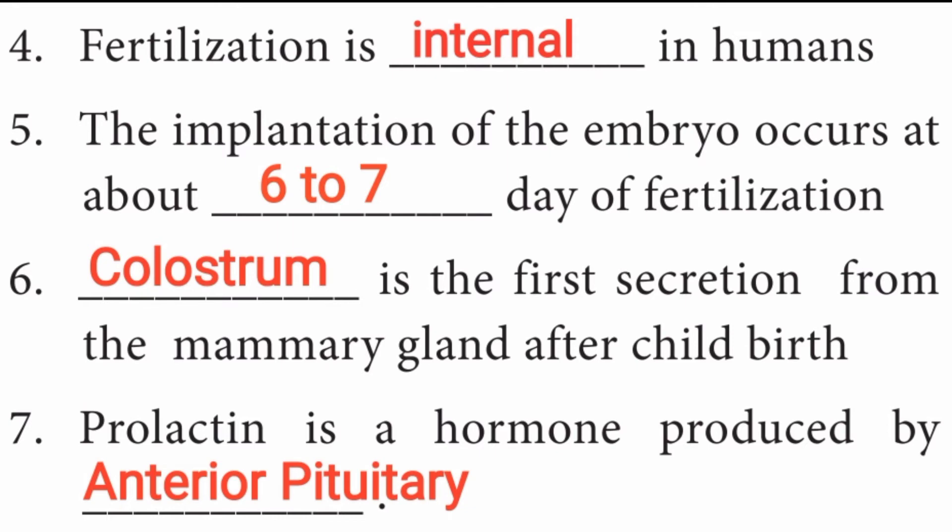Fifth question: the implantation of the embryo occurs at about dash day of fertilization. Answer is 6 to 7 days. Sixth question: dash is the first secretion from the mammary gland after childbirth. Answer is colostrum. Seventh question: prolactin is a hormone produced by dash. Answer is anterior pituitary. Prolactin is produced by the anterior pituitary.